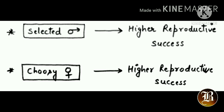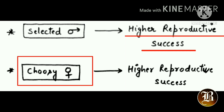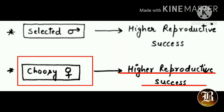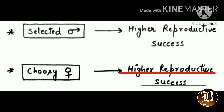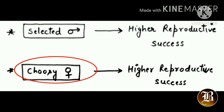If a male is selected, he will show higher reproductive success. Similarly, if a female chooses a better male, she will also show higher reproductive success. So good reproductive success can be achieved by the male if he is selected, and by the female if she selects wisely.